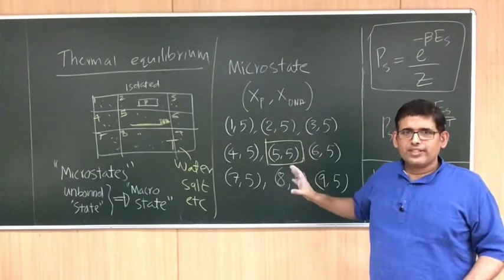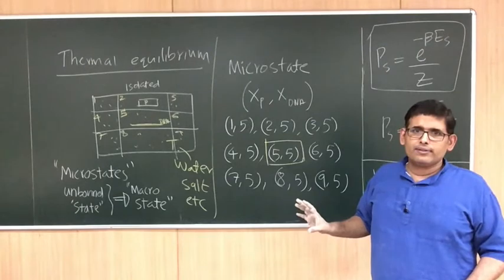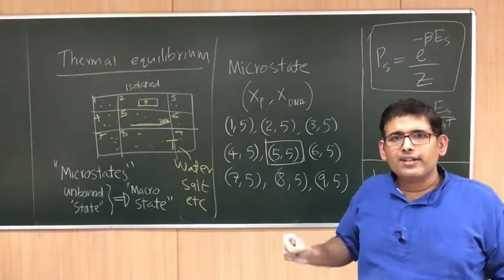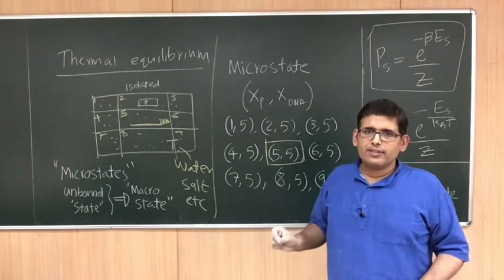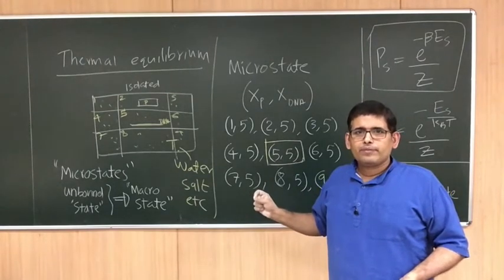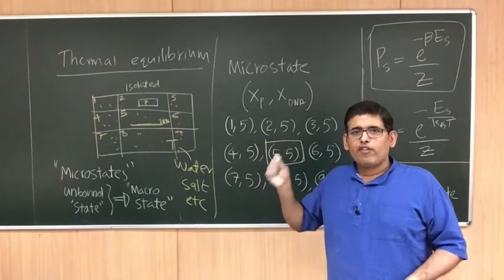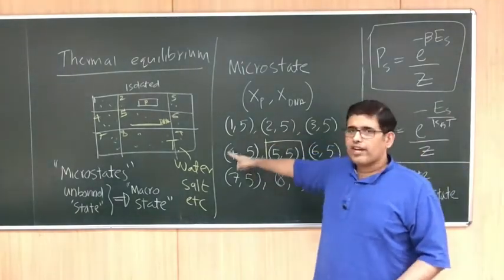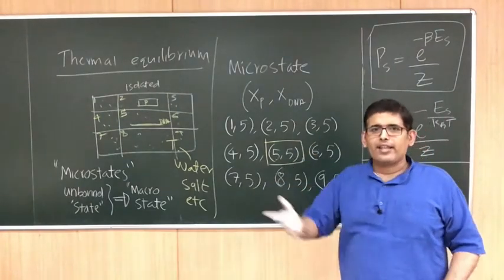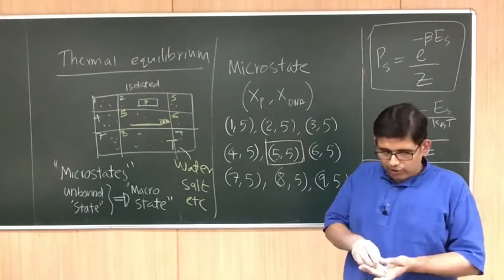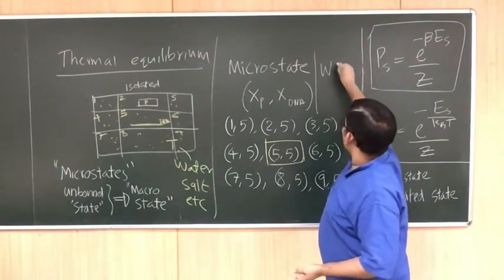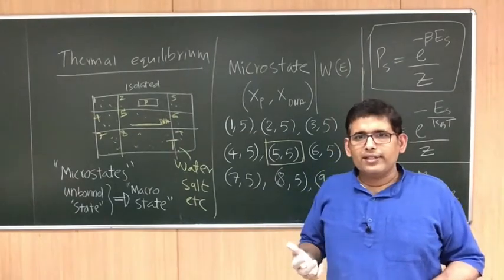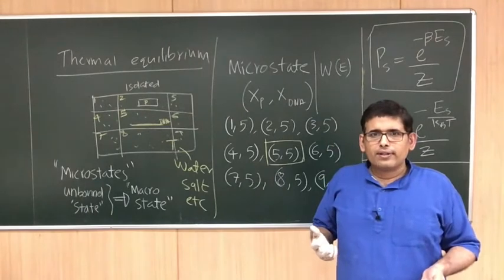In the dissociated macrostate, there are eight microstates — think about how many microstates are in a particular macrostate. We can also think about how many microstates there are of a particular energy. In this case, all eight dissociated microstates had energy 0, and only the bound microstate had a particular energy ε. We are going to use this idea — the number of microstates having a particular energy E — to define entropy in the coming lectures.